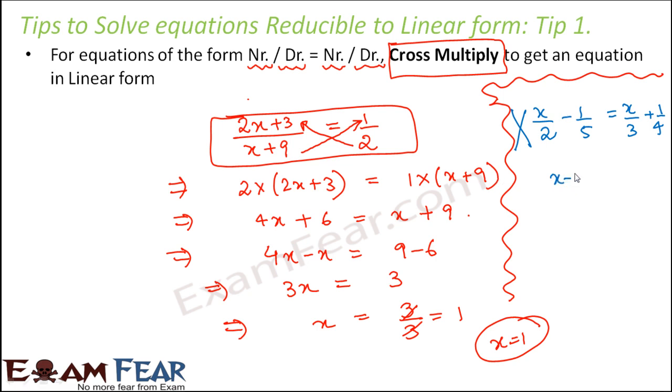So this will not be applicable for this case. However if you have an example like x minus 1 by 2 is equal to x plus 1 divided by 12, so here you see it is in the same form: numerator by denominator, numerator by denominator. So here this rule would be applicable. So you can directly cross multiply.